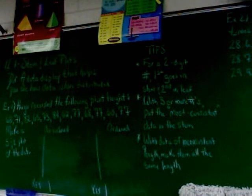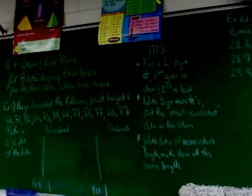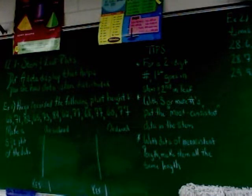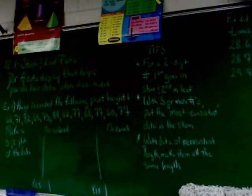For example one down at the bottom of the left column there, it says Hugo recorded the following plant heights. And we don't know what units they are, so we're just going to go with the numbers: 62, 71, 82, 65, 73, 84, 62, 77, 68, 77, 63, and 77. And we're supposed to make a stem and leaf plot.